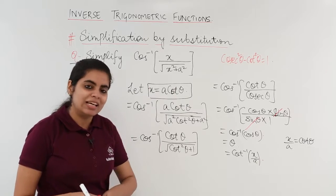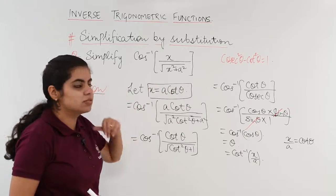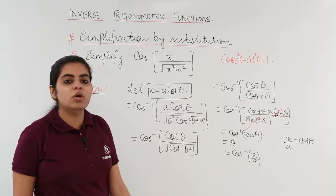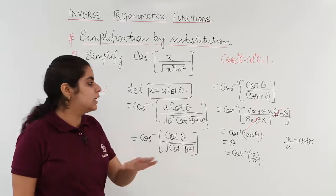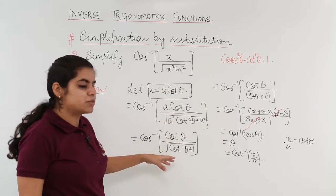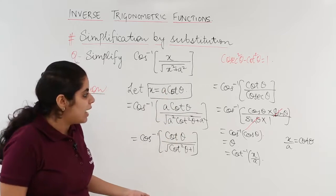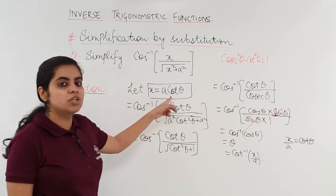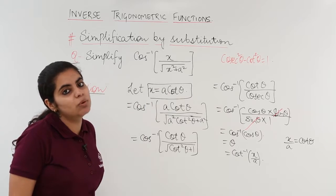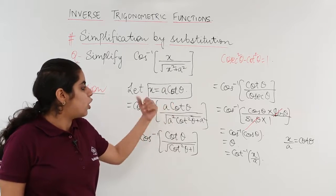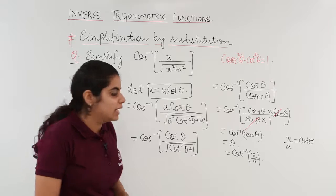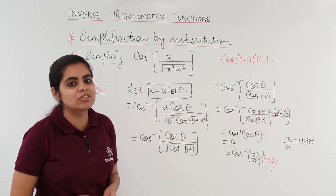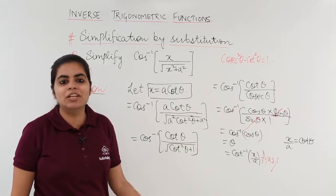Let me repeat: the question is cos inverse of x / √(x² + a²), and it is based entirely on the substitution method. We substitute x = a·cot θ, simplify, and then return to the substitution to find that θ = cot⁻¹(x/a). That is the final answer. In the next video, we have one more illustration dedicated to simplification by substitution.